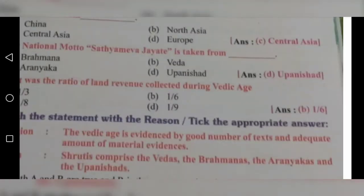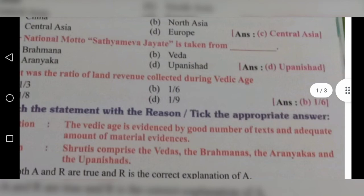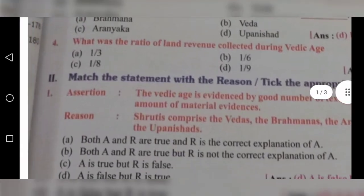Fourth question: What was the ratio of land revenue collected during the Vedic age? The options are 1/3, 1/6, 1/8, and 1/9. Among these, option B is the correct answer: 1/6. The ratio of land revenue collected during the Vedic age is 1/6.